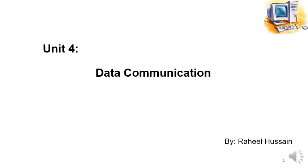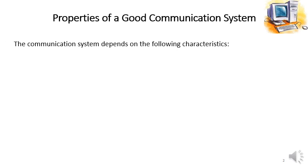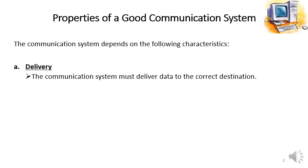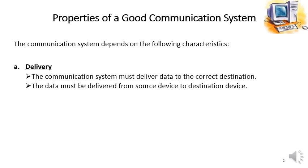The properties of a good communication system depend on the following characteristics. The first one is delivery. The communication system must deliver data to the correct destination — that is the first essential thing. The data must arrive at the intended or correct destination, from source device to destination device, and must not be delivered to a wrong destination.